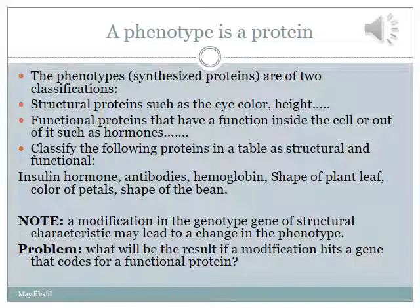Are physical characteristics the only phenotypes and the only produced proteins? The answer is no. Other proteins such as hormones, enzymes, and antibodies are also considered phenotypes. These proteins have a real function to perform — they are functional proteins. We can classify proteins into two categories: structural proteins and functional proteins. Please classify the following example proteins in the table as structural or functional.